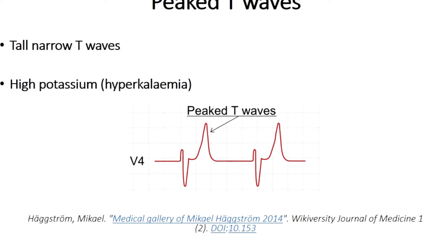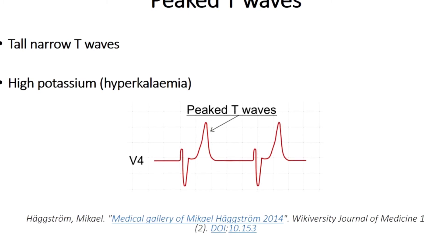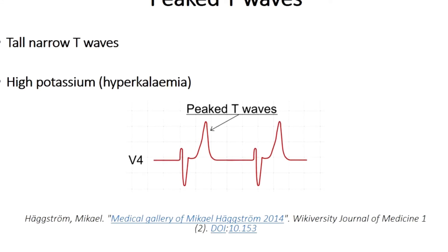A note on hyperkalemia management: you'll need to confirm the potassium level and in the interim give the patient calcium gluconate IV. You'll also often give them insulin and glucose to bring down the potassium level, as insulin leads to the influx of potassium into the cell.